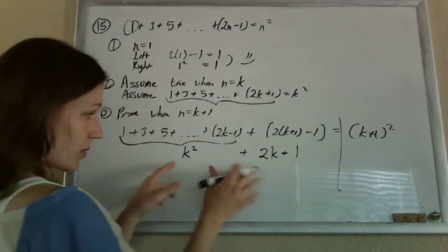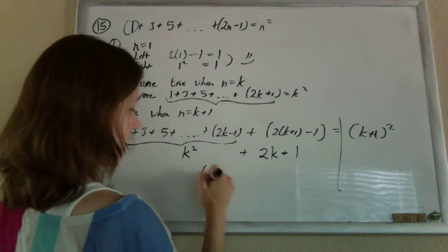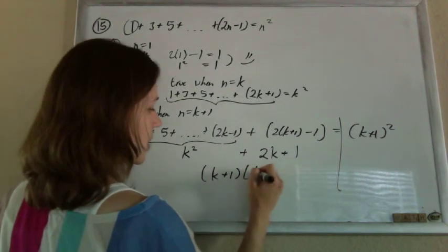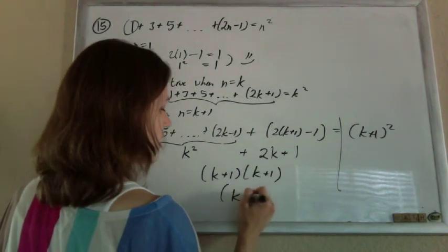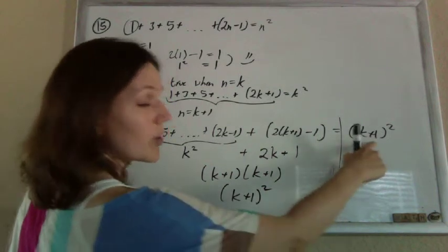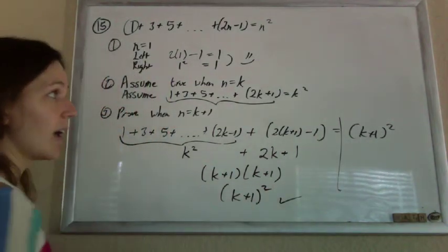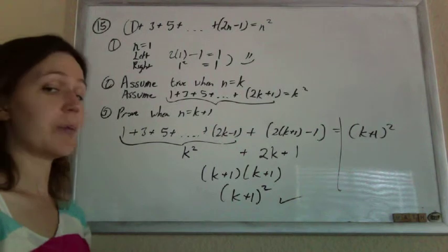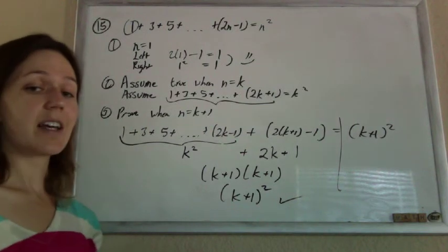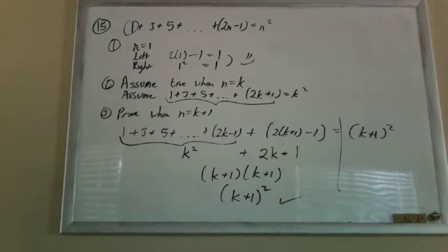And indeed this one falls out quite nicely, because this factors to k plus 1 times k plus 1, which is k plus 1 squared, which is exactly what we wanted to prove. And that is our proof by induction. That's it. I'll see you on the next step.